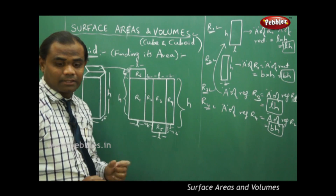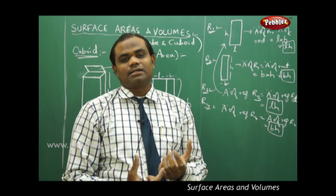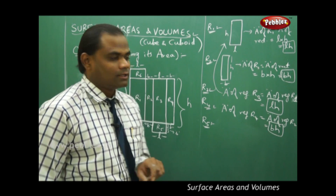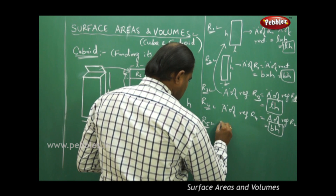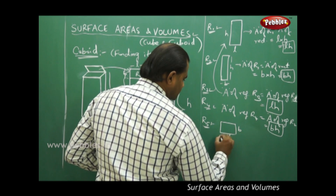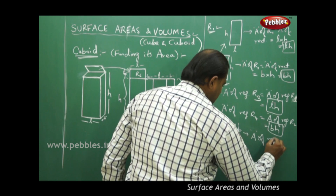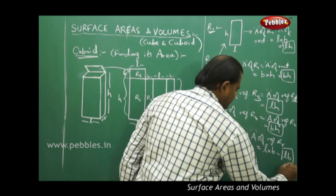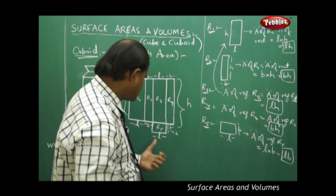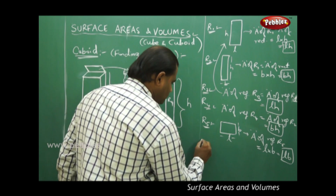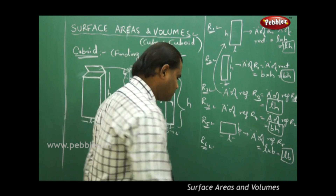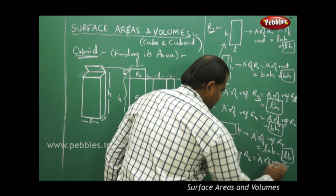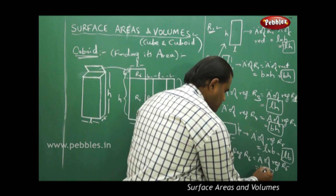Area of region R5 equals area of region R6 because the upper and lower faces of the box are identical. Region R5 is a rectangle with dimensions L and B, so area of R5 is L times B, giving us LB. Since R5 and R6 have equal areas, area of R6 is also LB.